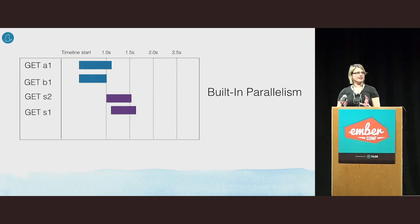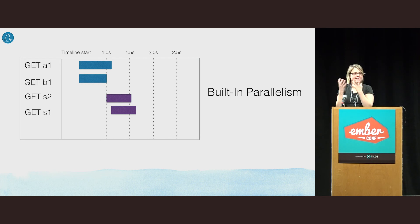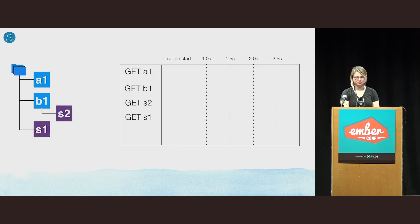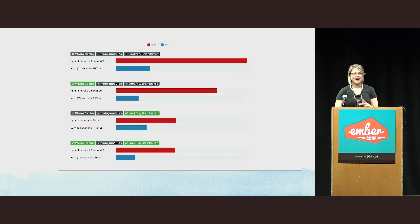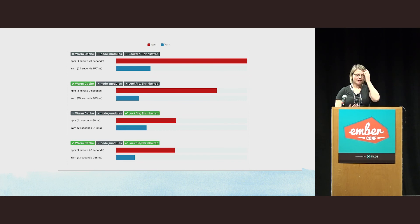Yarn has built-in parallelism. When Yarn creates package requests, it creates them for multiple top-level dependencies — A1 and B1 — at the same time. They both go off to the registry simultaneously, and whichever comes back first, we can immediately move on to its child dependencies. So A1 and B1 resolve at the same time in Yarn. According to benchmarks the Yarn team ran with both warm and cold caches, Yarn is consistently faster than NPM.